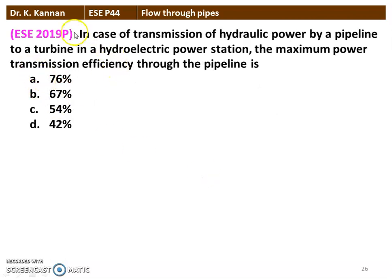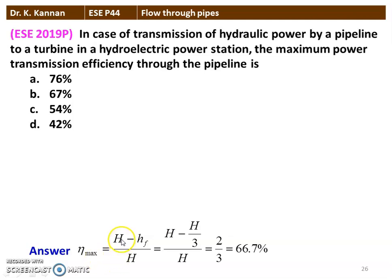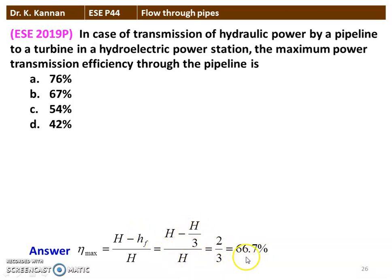The next question from the 2019 question paper: in case of transmission of hydraulic power by a pipeline to a turbine in a hydroelectric power station, the maximum power transmission efficiency through the pipeline is calculated as: efficiency = (H − HF)/H. For maximum power transmission HF = H/3, so efficiency = (H − H/3)/H = 2/3 = 66.7%, approximately 67%. Option B is the correct answer.